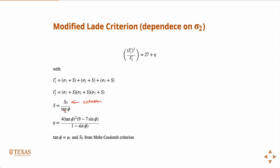It turns out that the tangent of phi is identically equal to mu, the internal friction. So eta is just a function of essentially the internal friction, or this phi that you can solve for from the internal friction.